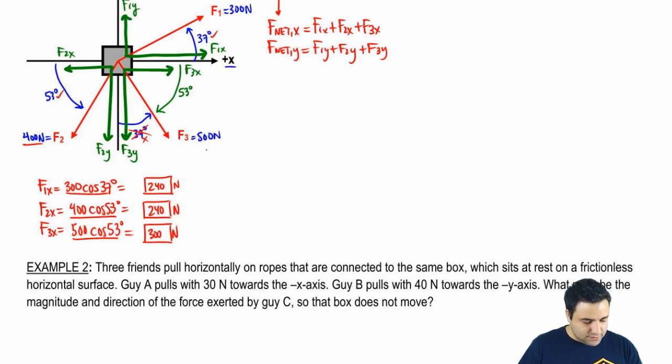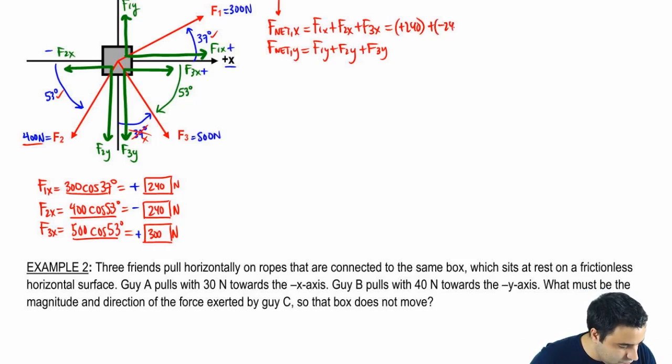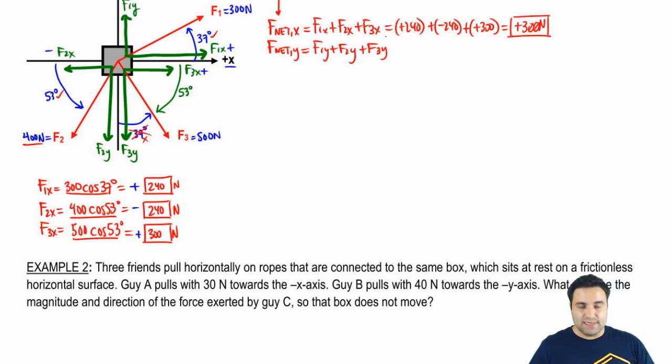f2 x gives me 240 newtons as well. And then this one gives me 300 newtons. And then lastly, let's check the signs. Don't forget to do that. f1 x is going to the right, so it's positive. f2 x is going to the left, so it's negative. And f3 x is going to the right, so it is positive. Now if I were to add these over here, I would get positive 240, negative 240, and positive 300. So the final answer is positive 300 newtons. Not the final answer, but f net x.